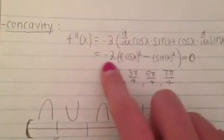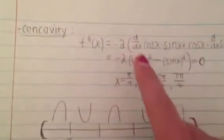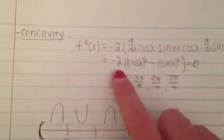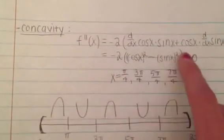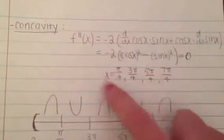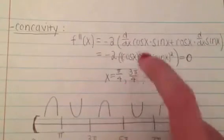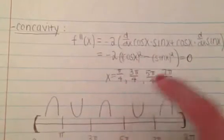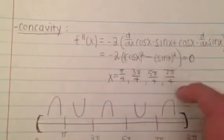Next is concavity. To find it, we take the second derivative. Applying the chain rule and product rule, the second derivative turns out to be negative 2 times (cosine squared x minus sine squared x). Setting that equal to 0 gives the x-values: pi over 4, 3 pi over 4, 5 pi over 4, and 7 pi over 4.